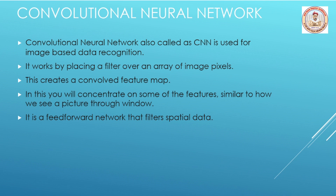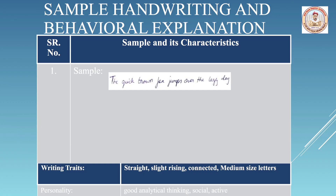This network helps in image-based data recognition. It works by placing a filter over an array of image pixels, which creates a convolved feature map. You concentrate on some features, similar to how we see a picture through a window. It accepts users' handwriting images and applies a filter to highlight the strokes, patterns, or curves of the letters from that image. It is a feed-forward network that filters spatial data — it is used to perceive patterns across spaces.